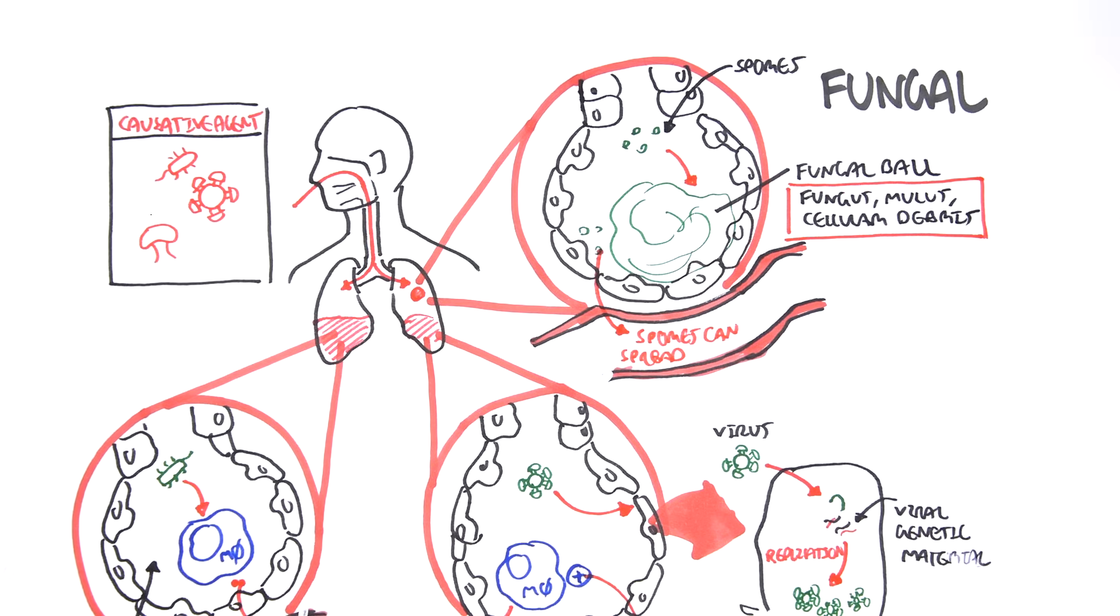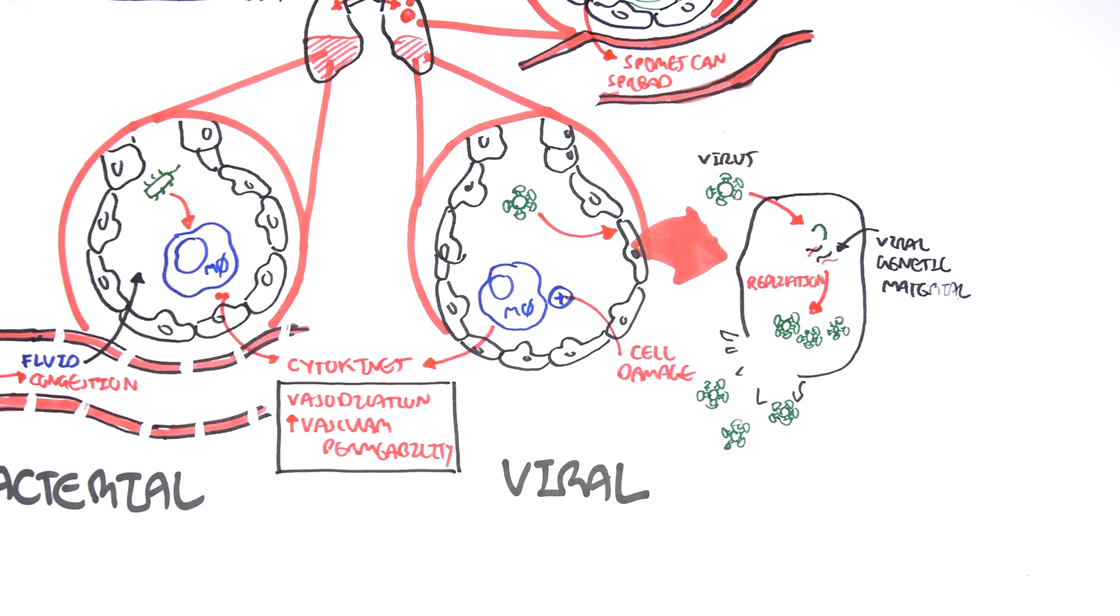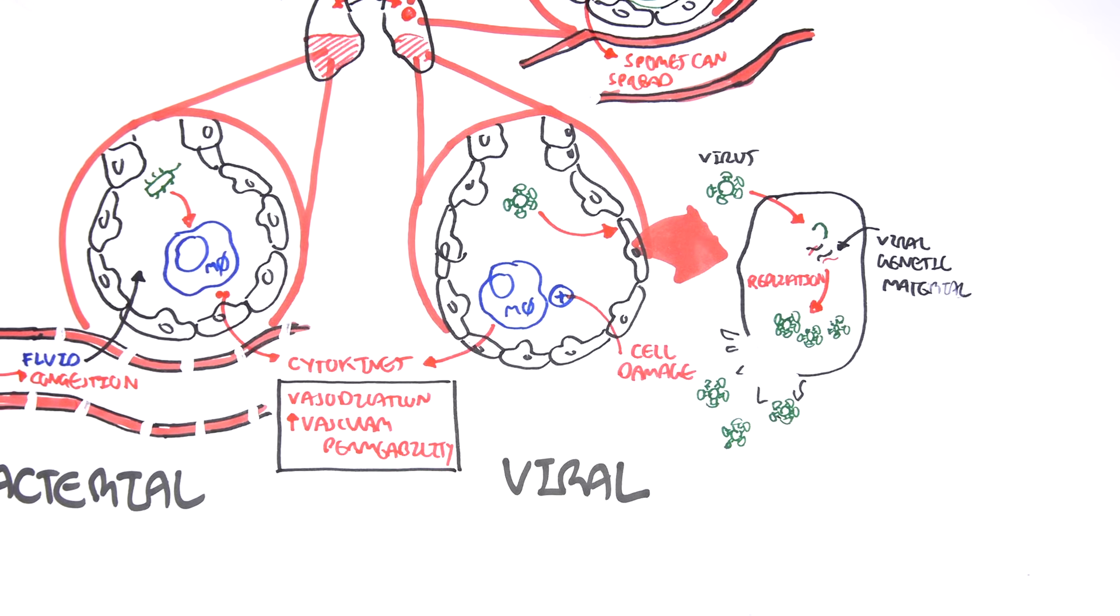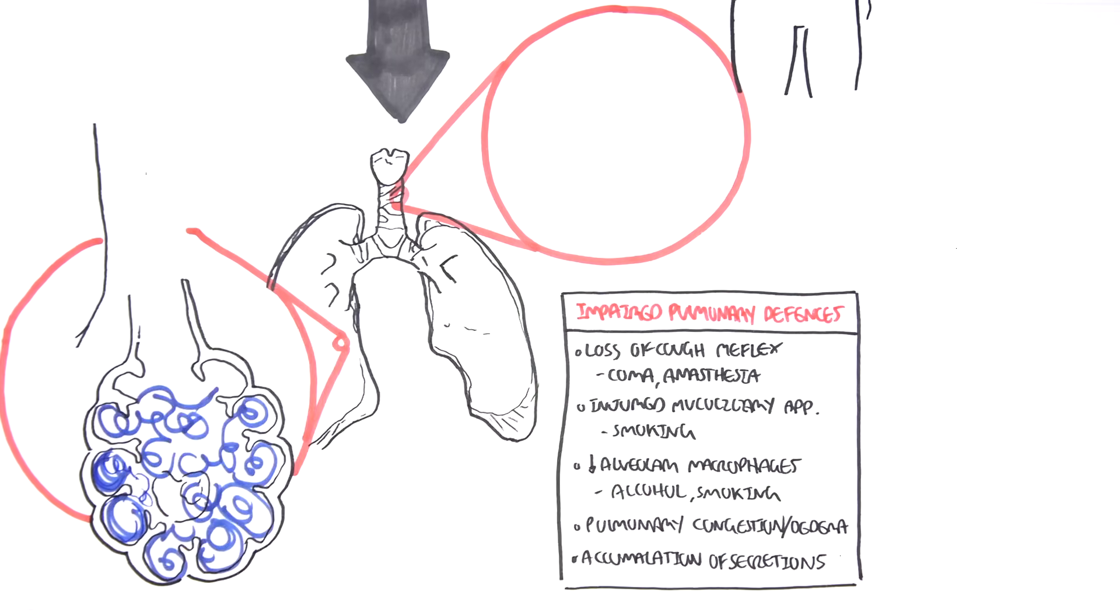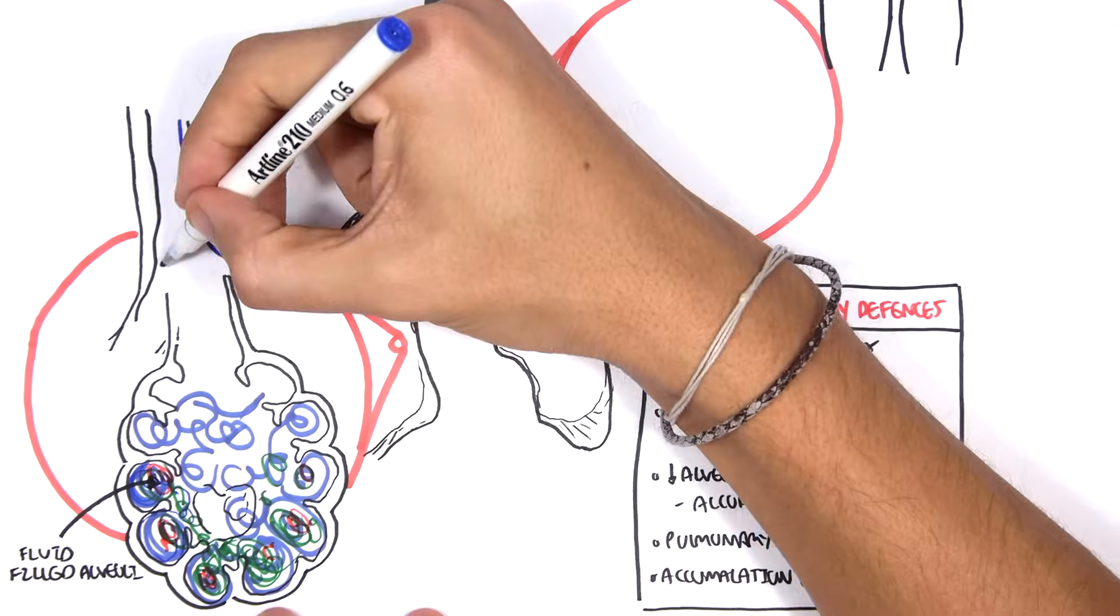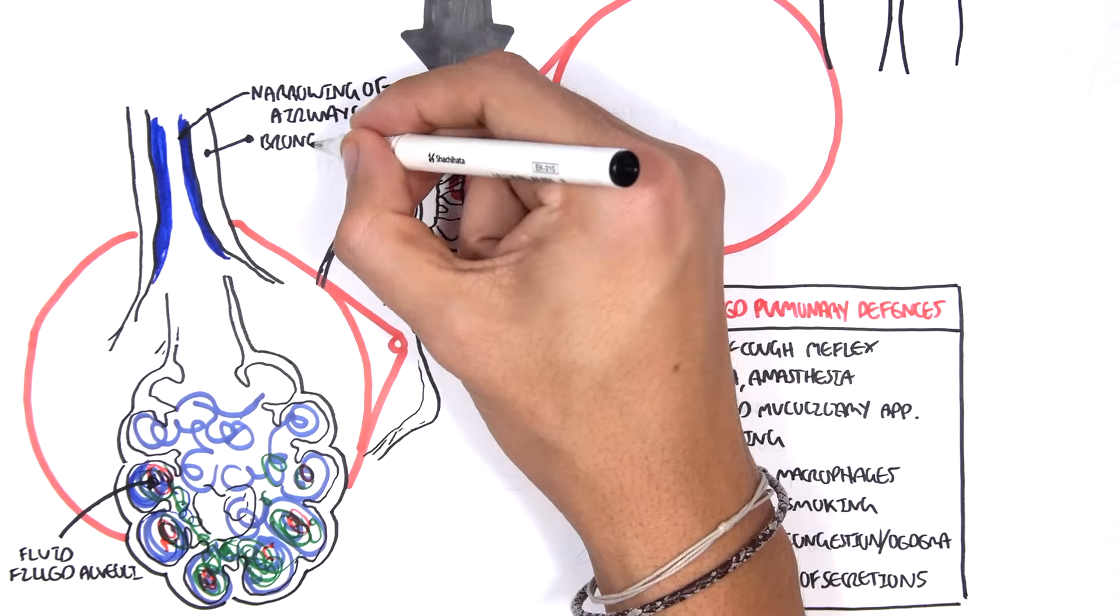So I hope you understood. That was just a quick overview of how these different causative agents can lead to pneumonia. Now let's go back to the main diagram and see, talk more about the infected lung. So in a lung infection, that is pneumonia, we see fluid-filled alveoli. We see narrowing of the airways, bronchoconstriction, and increase in mucus secretion.